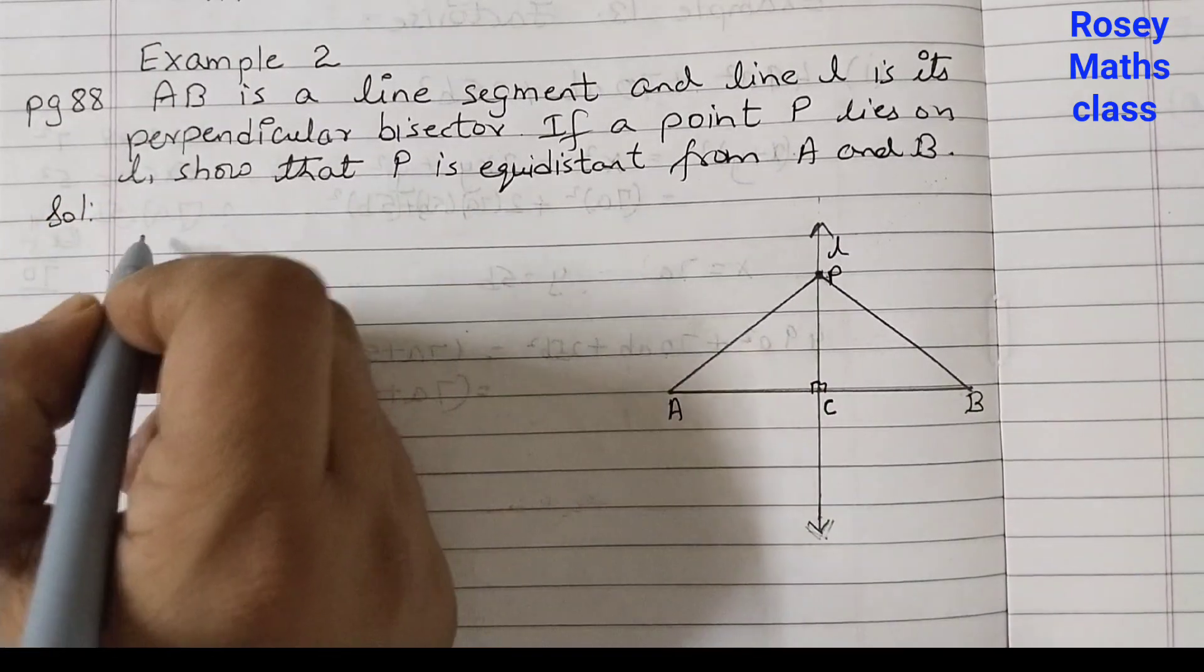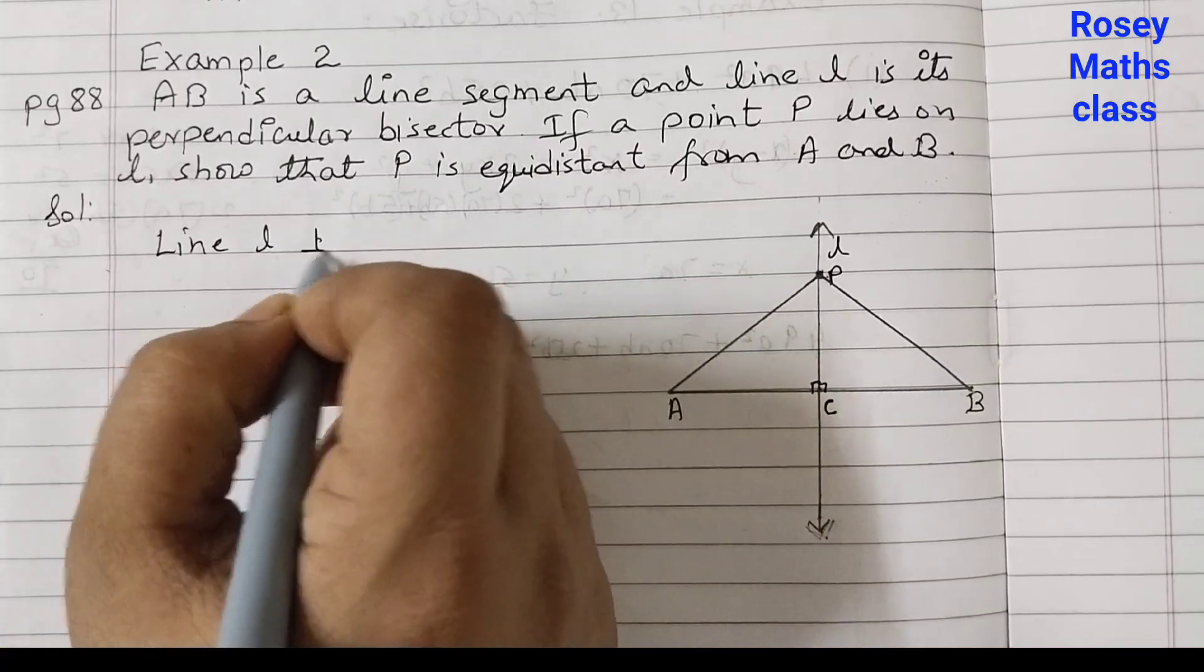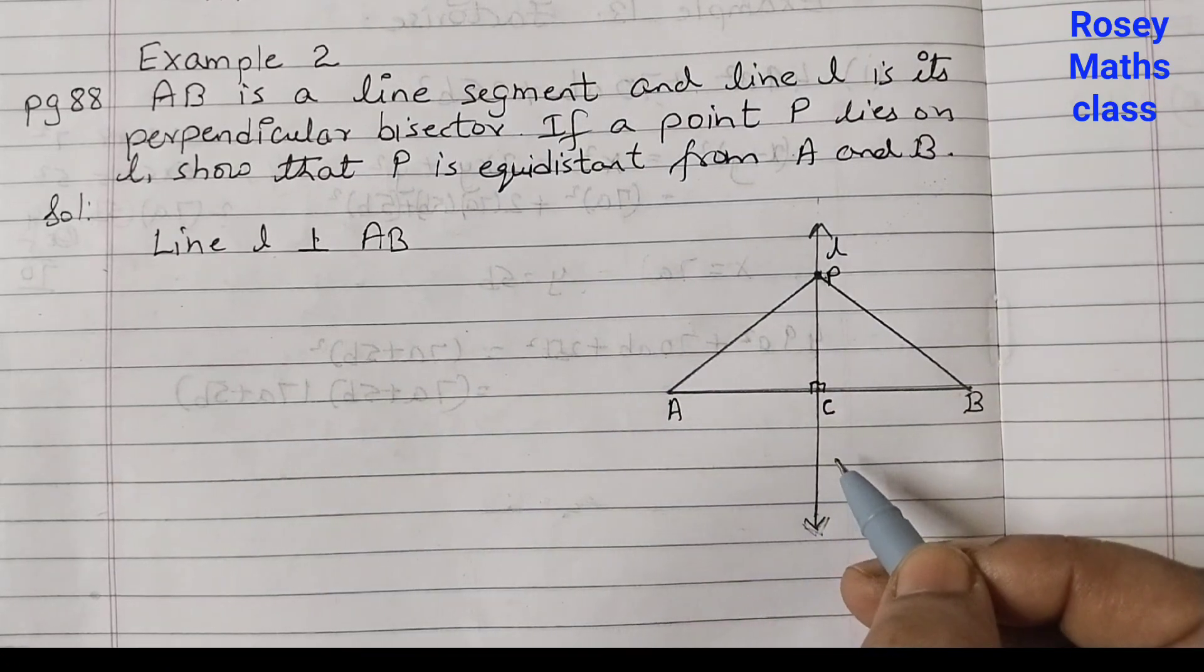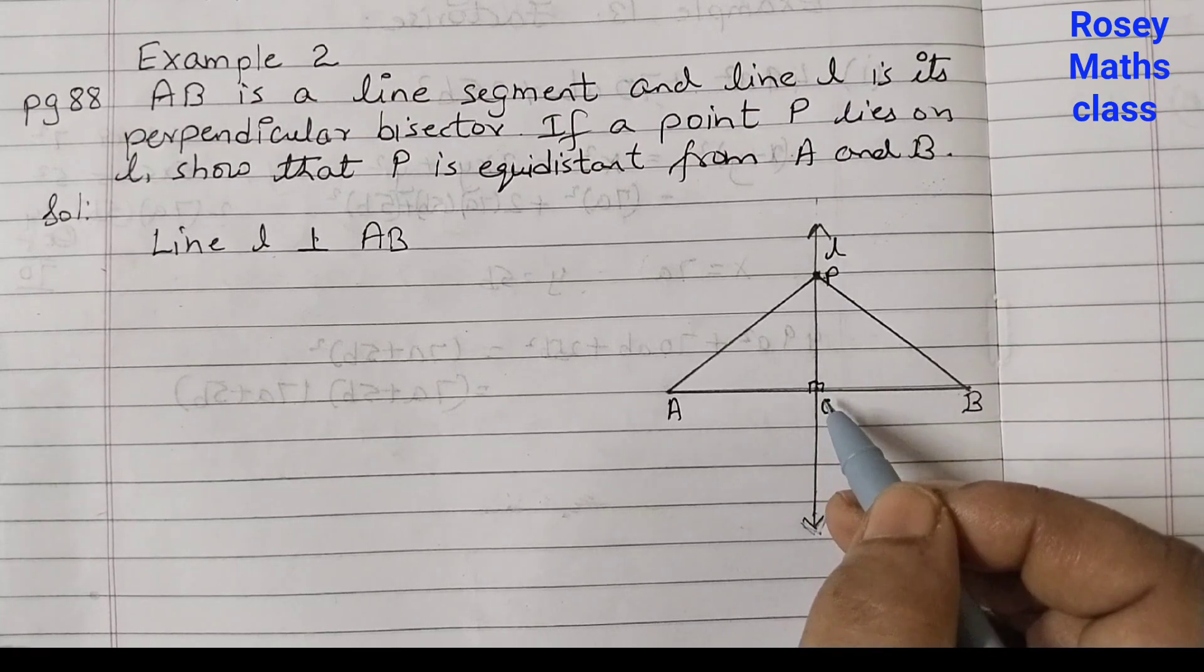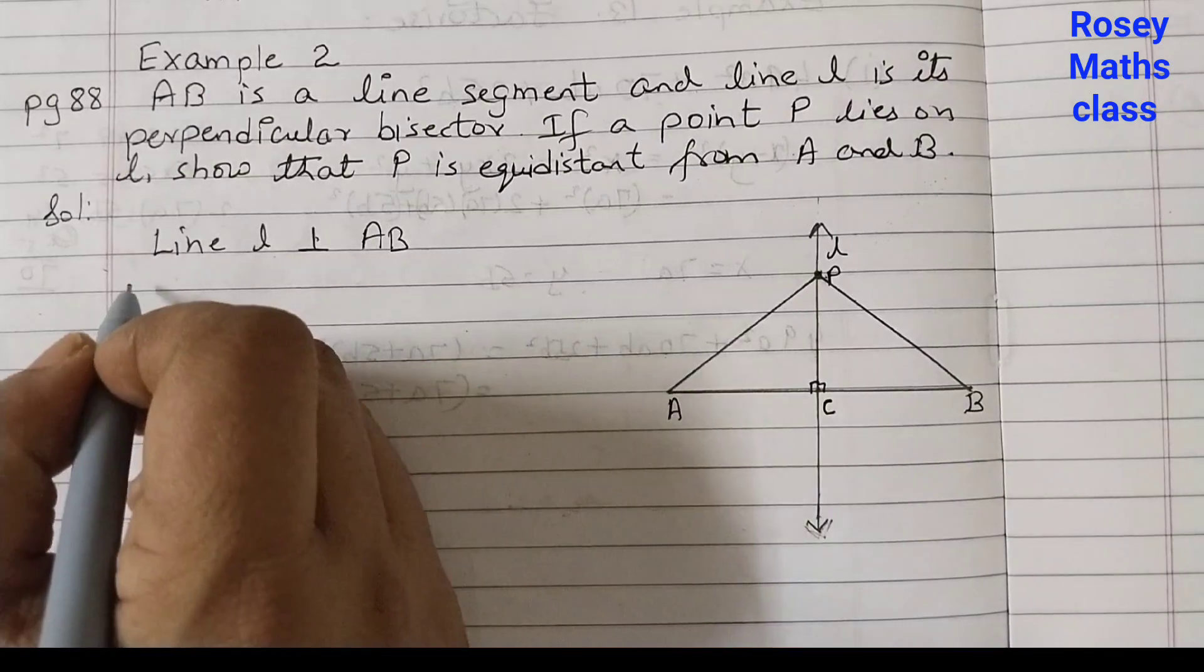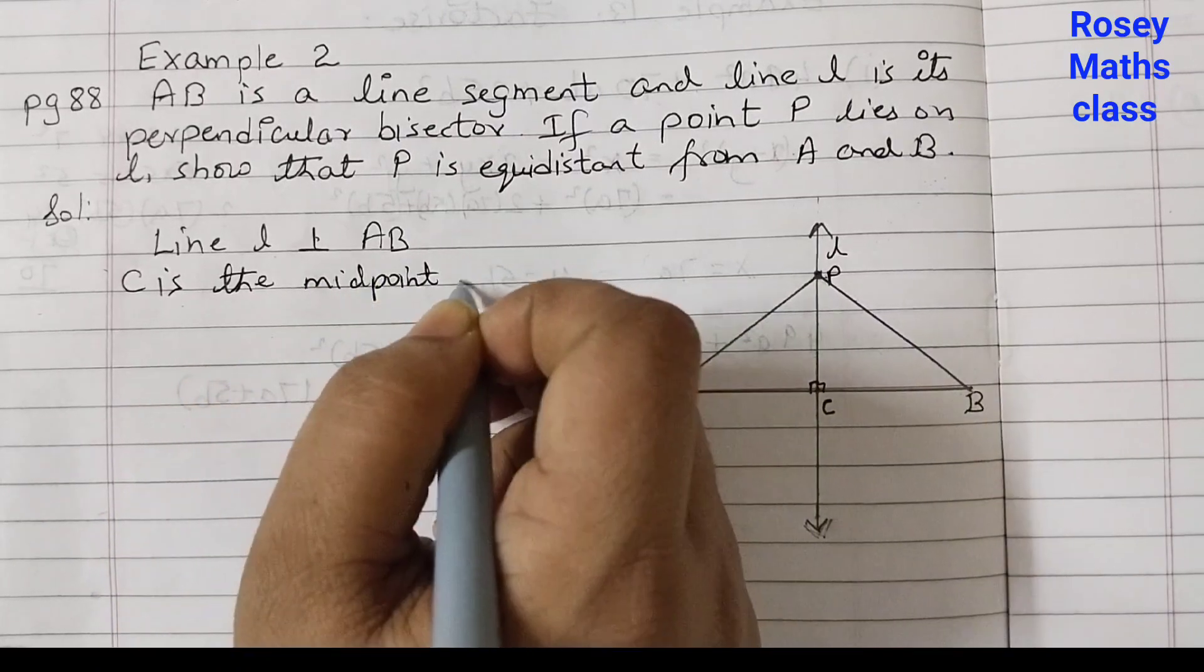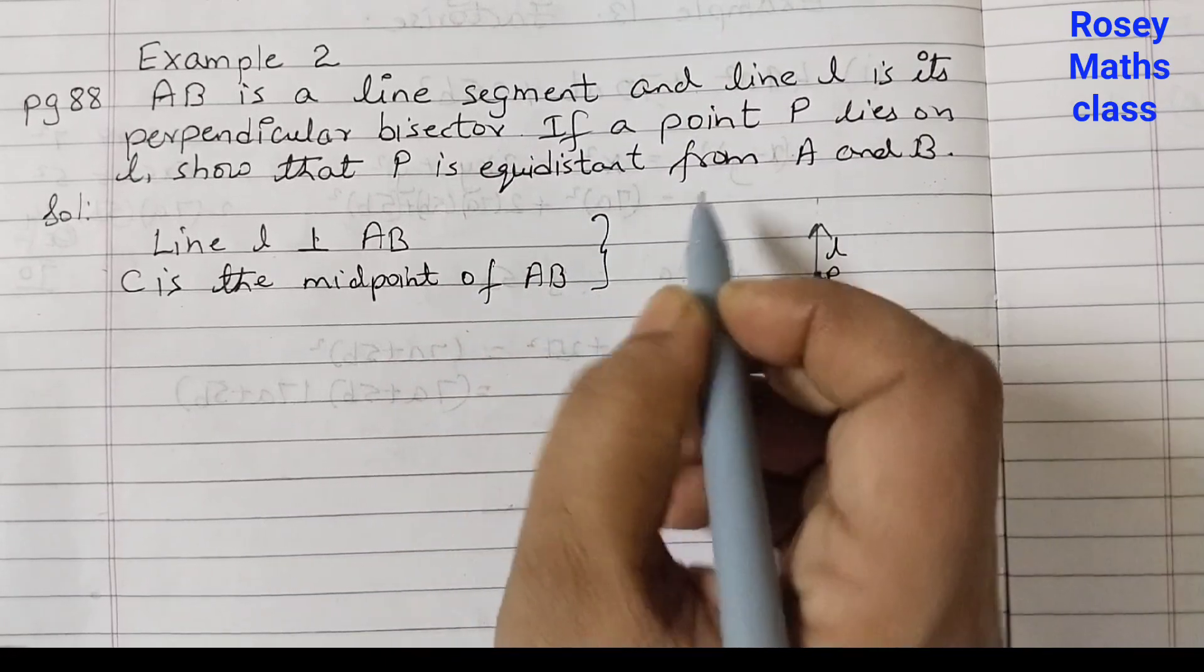Solution. What is given? Line L is perpendicular to AB. This is given in the problem and second thing is it is the perpendicular bisector dividing into two equal halves which means this line is passing through the midpoint. C is the midpoint of AB. This is what is given to us.